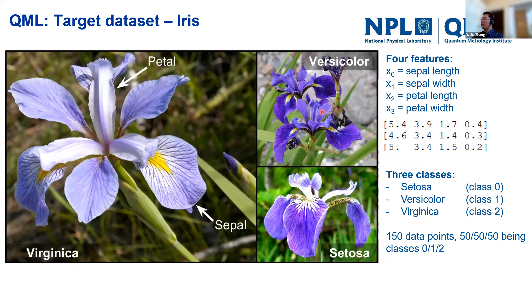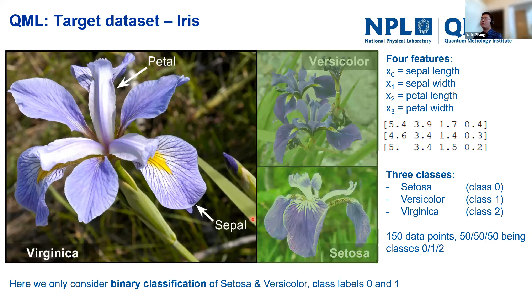The iris flowers belong to three classes: Setosa, Versicolor, and Virginica. The dataset has 150 data points, one third in each class. In this tutorial we only consider binary classification between Setosa and Versicolor — class labels zero and one.